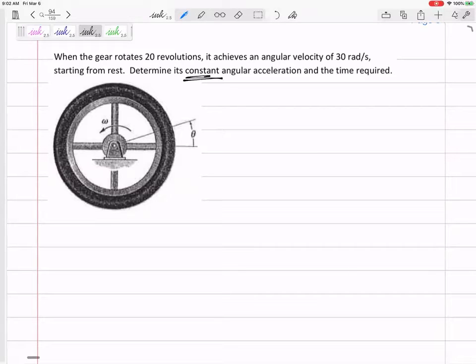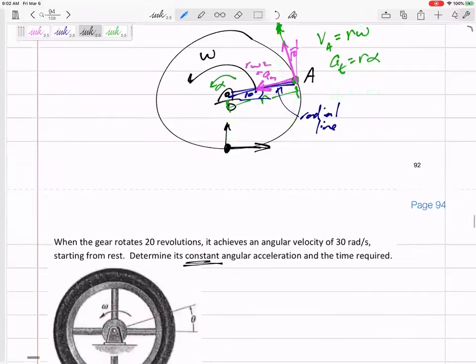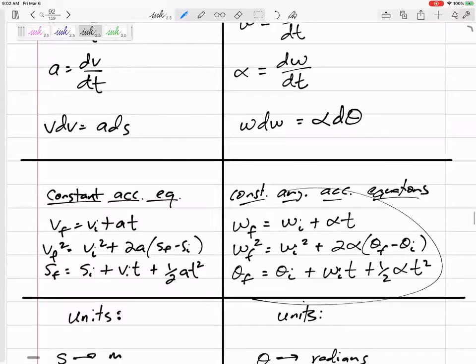Did you see that constant angular acceleration? So we can use those constant angular acceleration equations. We have three of them, so now we just have to decide which one should we use. We can go back a page, right here, here they are. It said starting from rest, right? So the omega initial is zero. It achieves a final angular velocity of 30, so omega final equals 30.